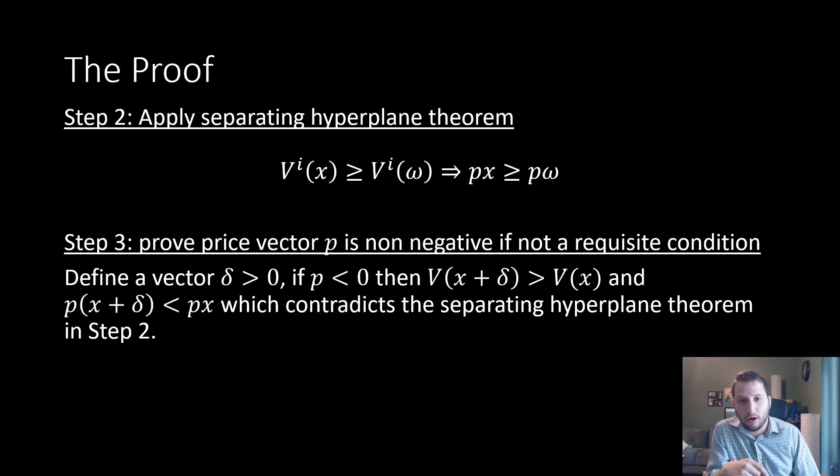Step two is that we're going to apply our separating hyperplane theorem. This just follows from our set that we're going to pick our object x and our object ω in each of these sets, and that's going to imply existence of a price vector such that p·x ≥ p·ω.